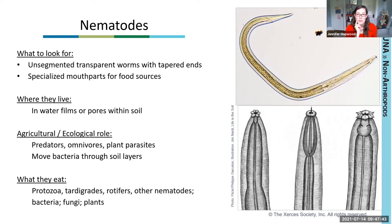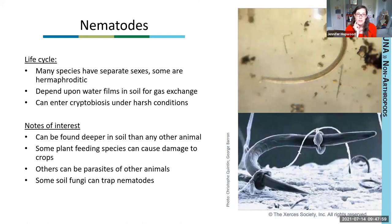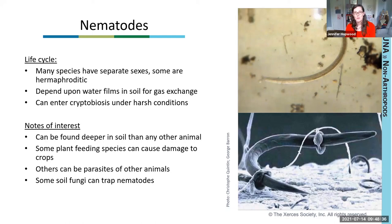Nematodes are among the most numerous animals on the planet — found in water, soil, and all habitats. Some species have separate sexes, some have both sex organs in the same individual. Like other water-film dwellers, they depend on soil moisture and enter cryptobiosis when water films dry up. The record for the longest-lived animal we know of is 30,000-year-old nematodes revitalized from glacial deposits — another incredibly tolerant group.